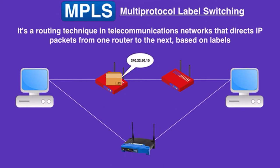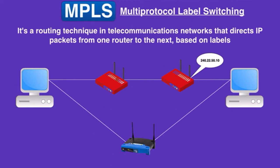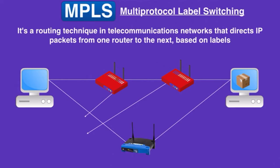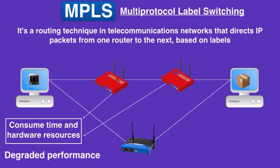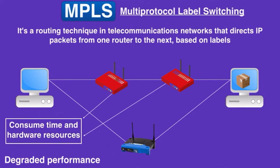After receiving an IP packet, the router opens it up and reads the IP address, then forwards the IP packet to the next router based on its routing table. The next router does the same thing. This process is repeated at each router along the route until the packet eventually reaches its destination. All of those stops and all of those individual routing decisions consume time and hardware resources, resulting in degraded performance for time-sensitive applications like voice and video.